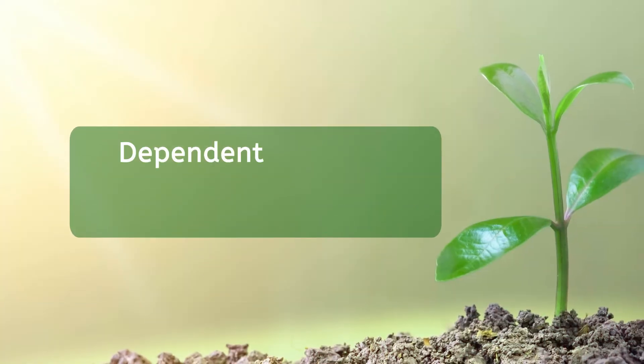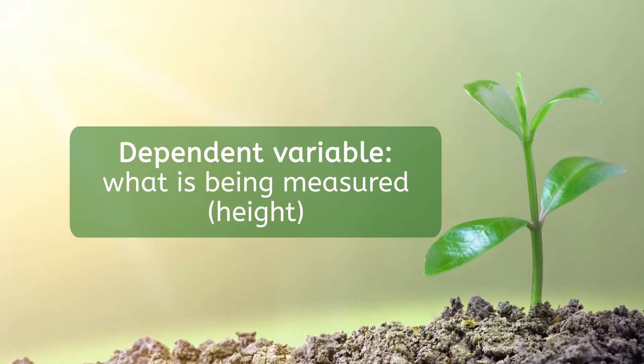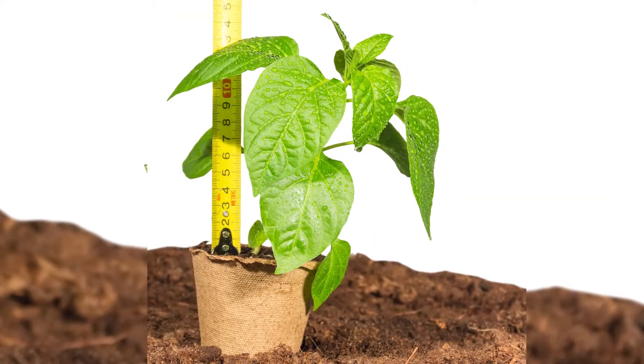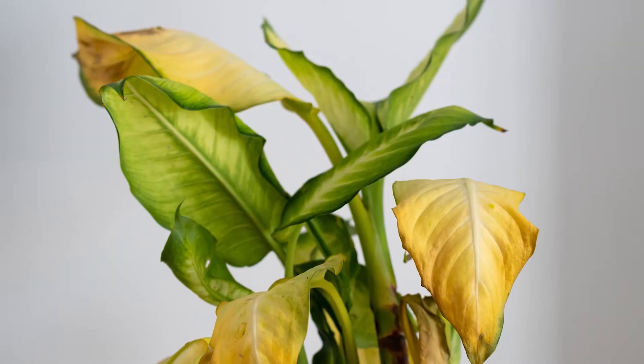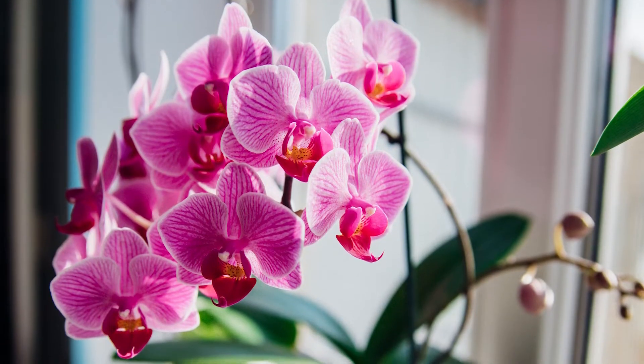Either the plants get fertilizer or they don't. The other variable I need to be aware of is my dependent variable. It depends on the independent variable — or at least we are wondering if it might — it is whatever is being measured as the outcome of the experiment. In our case, it will be the height of the plants. Of course, we could measure other dependent variables: the color of the leaves, how long the plant lives, whether it produces flowers — the list goes on and on. But to keep it simple today, we'll just focus on the height.